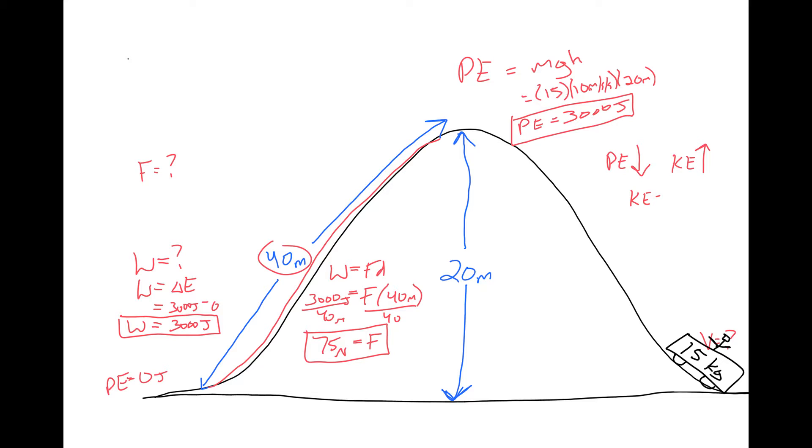So kinetic energy is related to that energy of motion, one-half mass times velocity squared. So the kinetic energy it has now, all the way at the bottom of the hill, energy is conserved. So it's going to be the same amount of energy that we had at the top, because it's now all turned into kinetic.